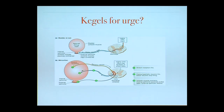Kegels help urgency because your bladder and pelvic floor work antagonistically: when your bladder squeezes, your pelvic floor relaxes so you can urinate. The opposite is also true — there's a reflex loop. When you squeeze your pelvic floor, your bladder can relax — it's giving a signal saying, 'Hey, relax, I'm not ready yet.' So doing those Kegels can help with your urgency symptoms.